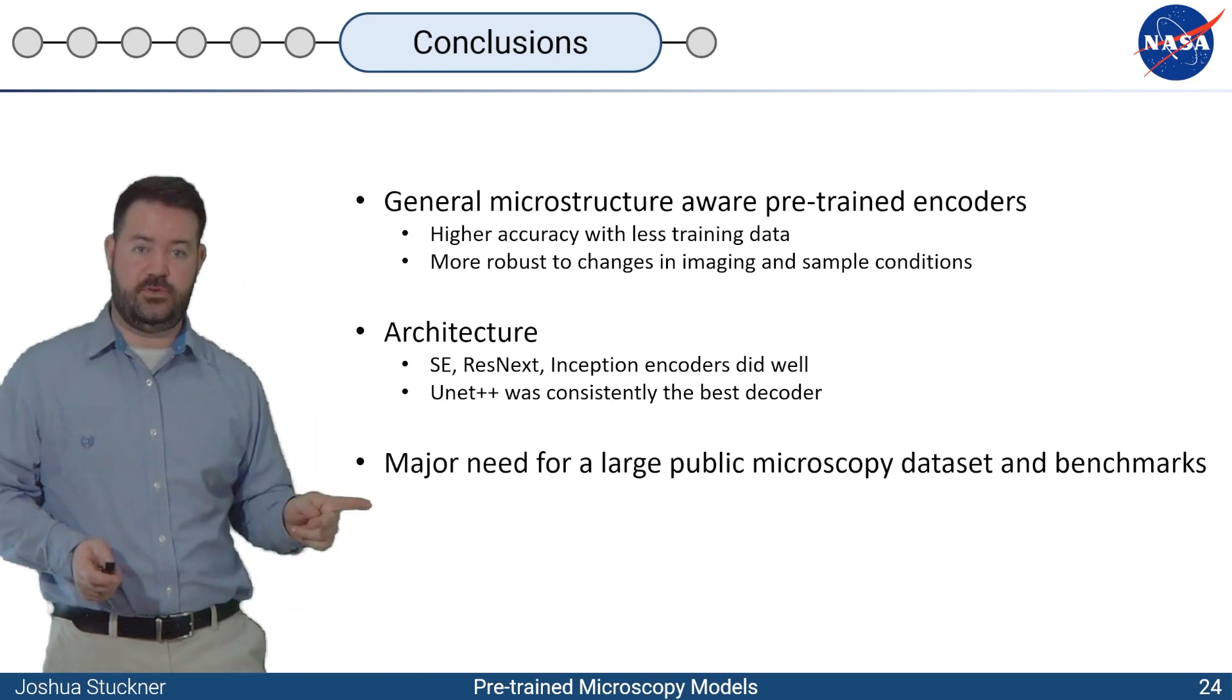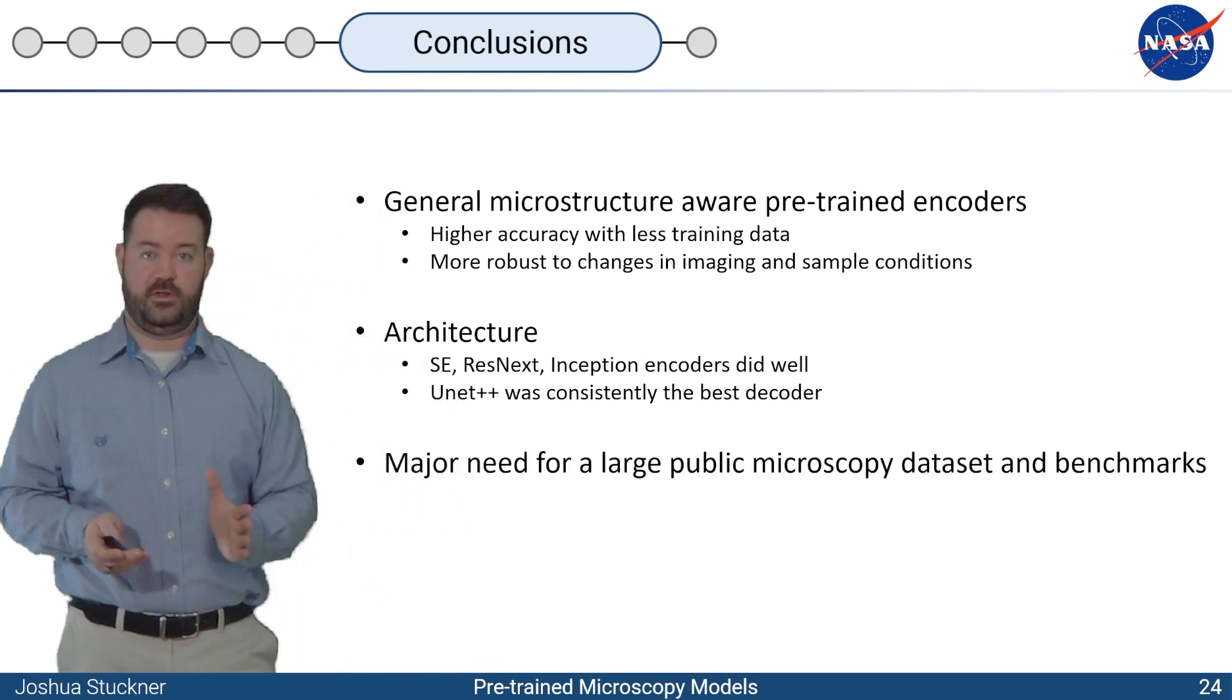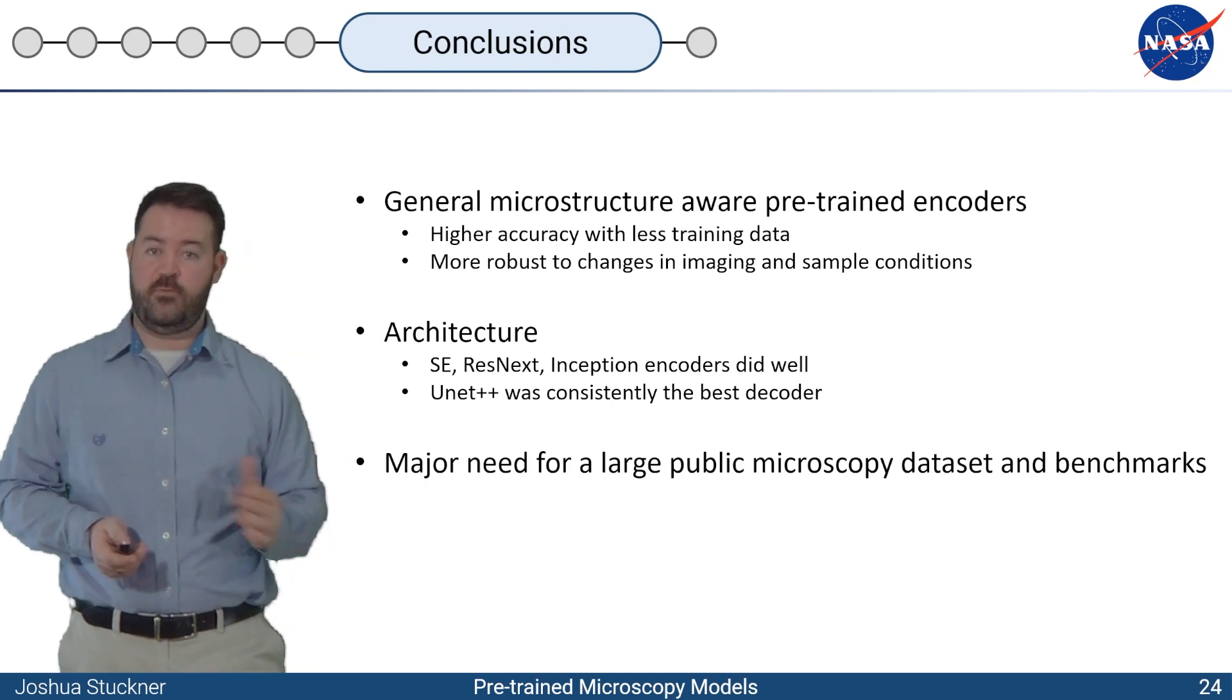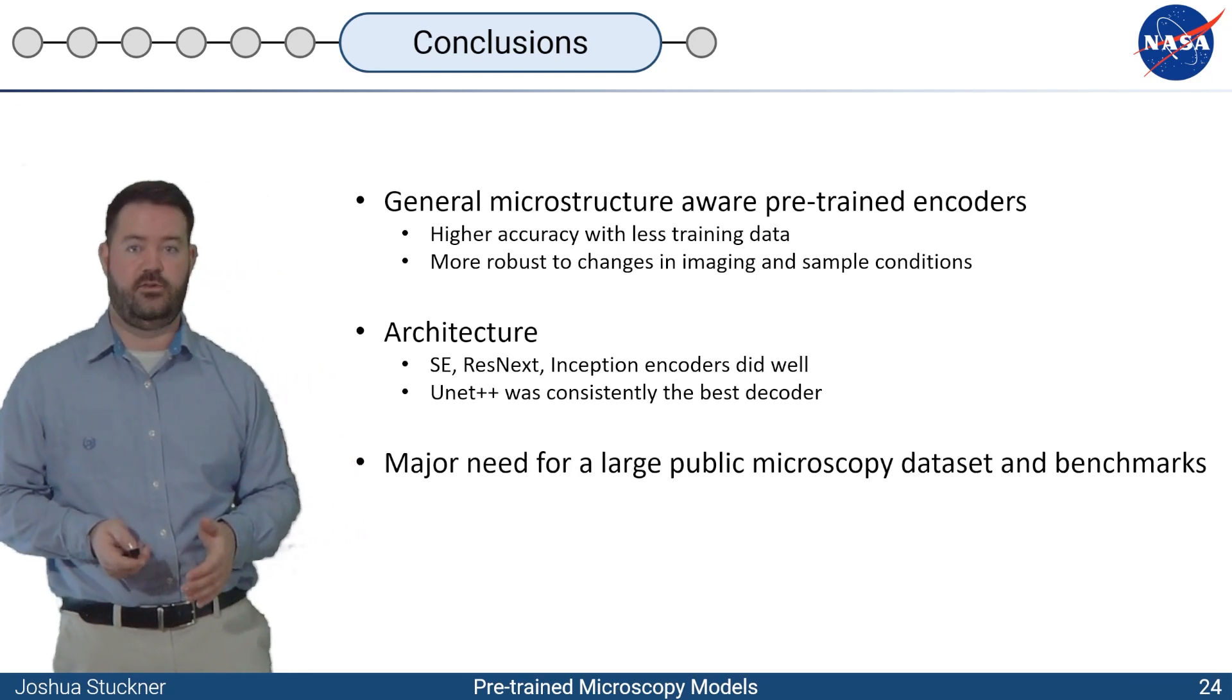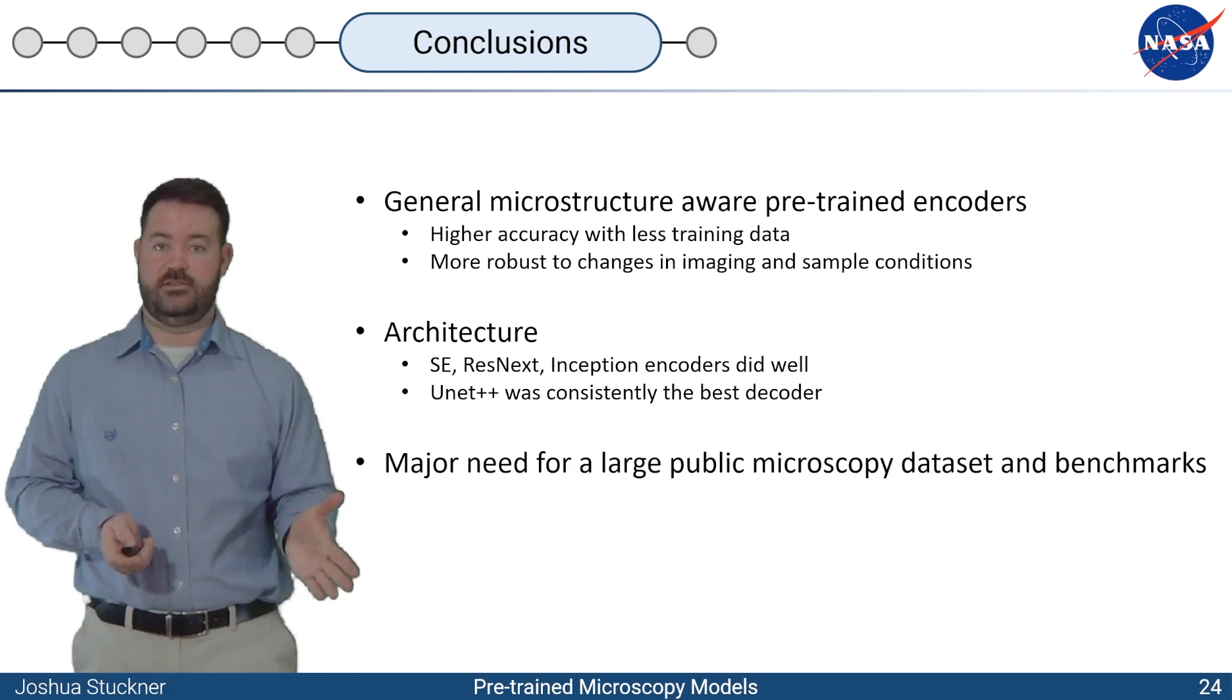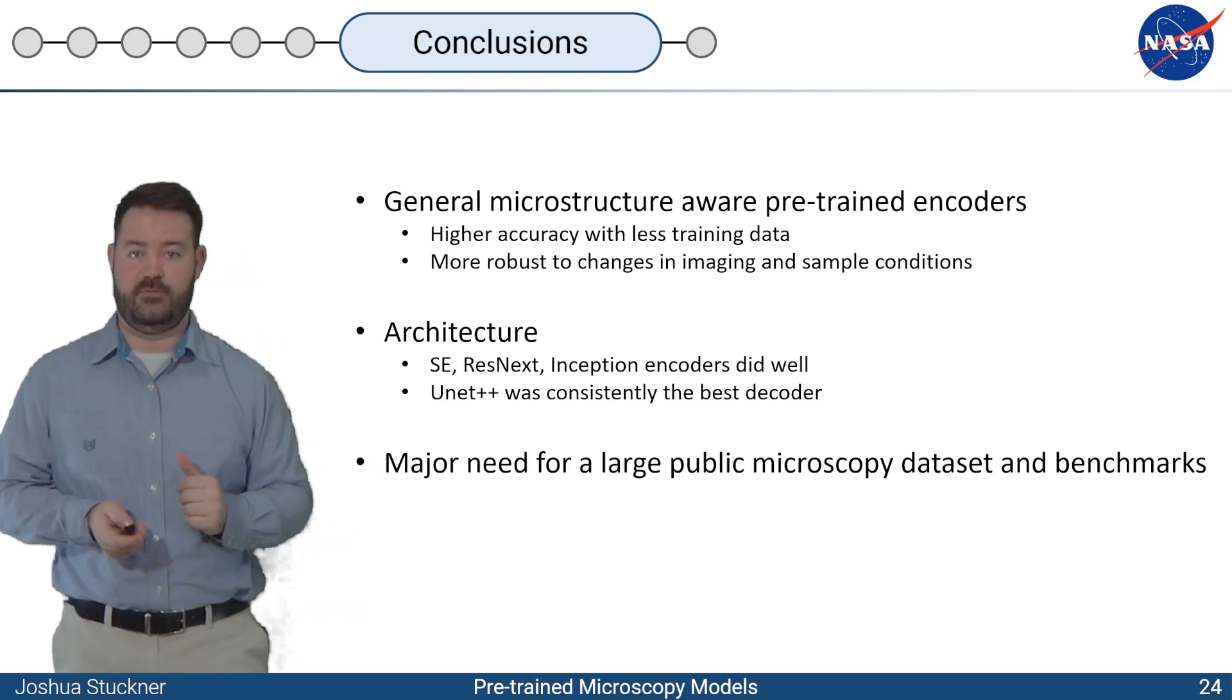There's a major need for a large microscopy data set and benchmarks so we can evaluate different methods with segmentation or regression benchmark datasets. Or if we had a bigger Micronet, then we can train even better encoders like ImageNet. And the computer science natural image world, they're pre-training on hundreds of millions of images where we only have 100,000 that I put together was the largest that I've ever seen. And so if we could have a large public data set, we could really improve the field a lot.